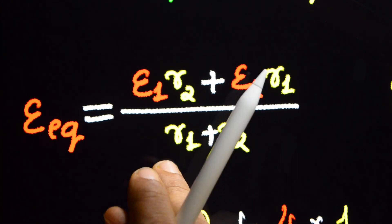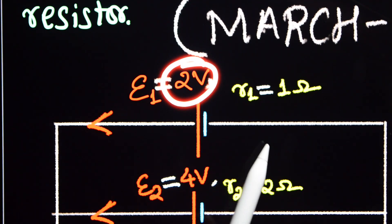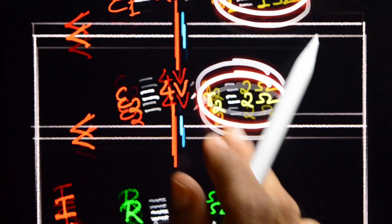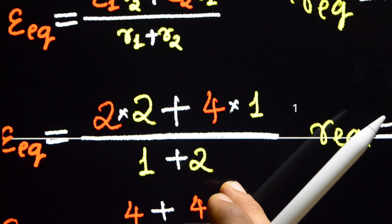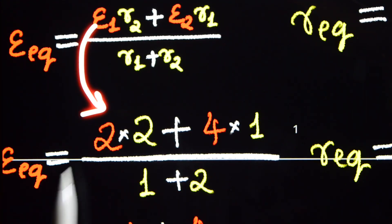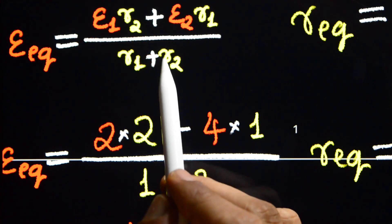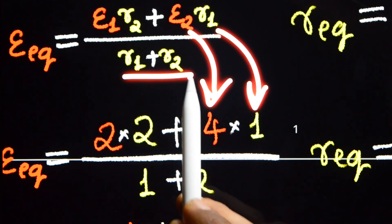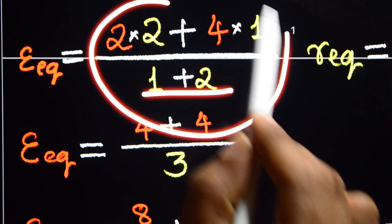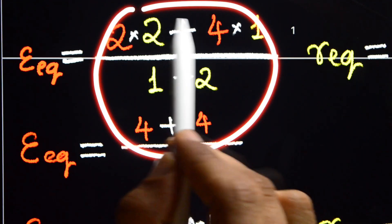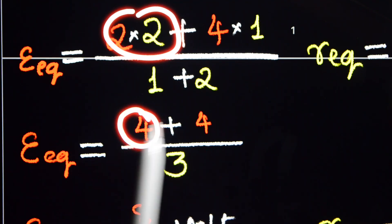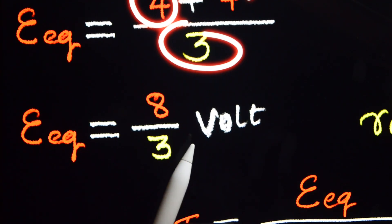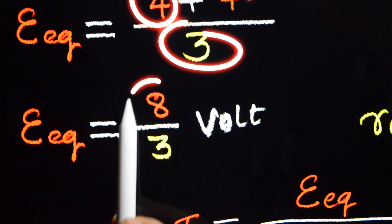E1 is 2 volt, E2 is 4 volt, R1 is 1 ohm, R2 is 2 ohm. Substituting: E equivalent equals (2 into 2) plus (4 into 1), divided by (1 plus 2). That is 4 plus 4 divided by 3, which equals 8 by 3. So the effective EMF of the two cells in parallel is 8/3 volt.